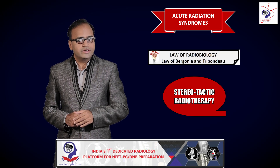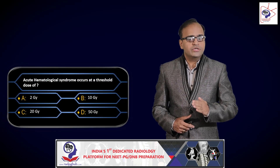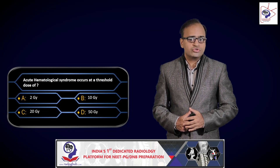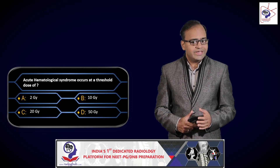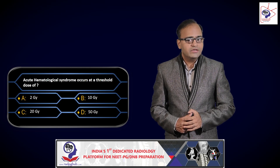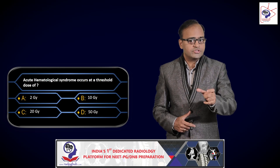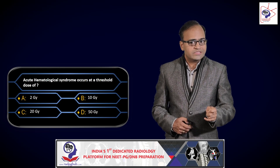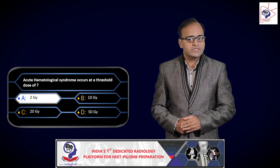We will have a look at radiotherapy details in a later session. Every video published as part of this channel will have certain multiple choice questions at the end for high-yield revision. Now let us look at a few recently asked questions on the topics we have just discussed. One question asked: acute hematological syndrome occurs at a threshold dose of — options were 2 grays, 10 grays, 20 grays, and 50 grays. The correct answer, as we just discussed, is that acute hematological syndrome is the first syndrome seen and occurs at a threshold dose as low as 1 to 2 grays, so 2 grays is correct.